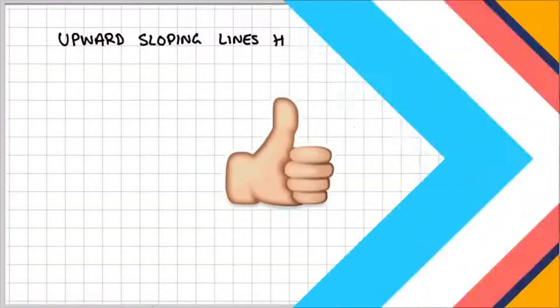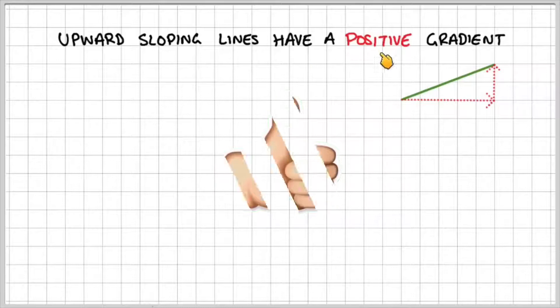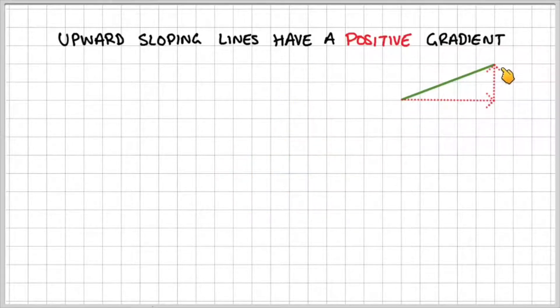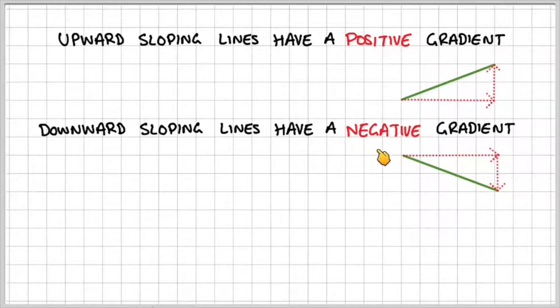Right, moving on. So a couple of definitions then. An upward sloping line has a positive gradient. So if we have a line going upwards, we have a positive gradient. Whenever we have a downward sloping line, we have a negative gradient.